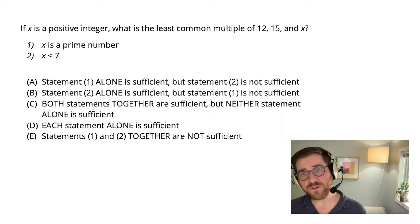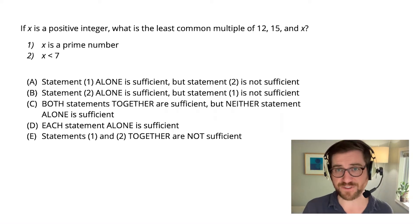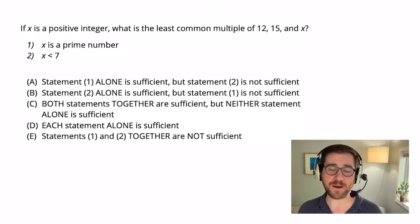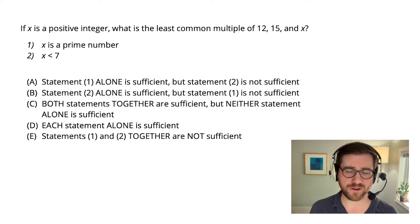Starting off with the process, if you're new to this question format, this is data sufficiency, what the cool kids call DS on the GMAT. This is going to make up a little under half of the quantitative reasoning problems that you'll see, and it's likely new to you if you're just starting with the test. It's kind of a weird question format. So let's break this down into its component pieces and talk about how to approach this type of problem.